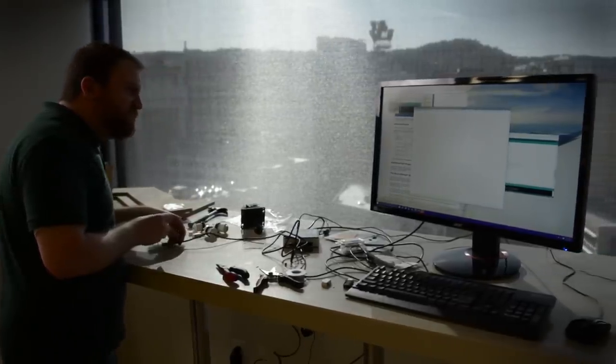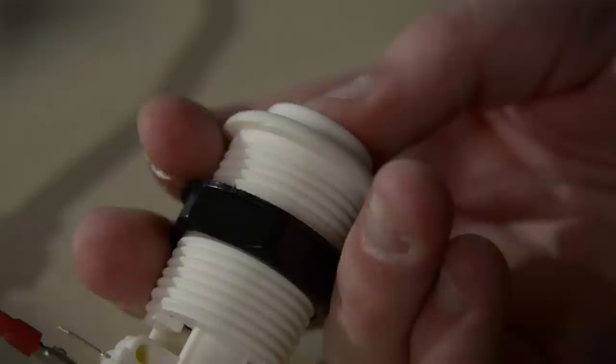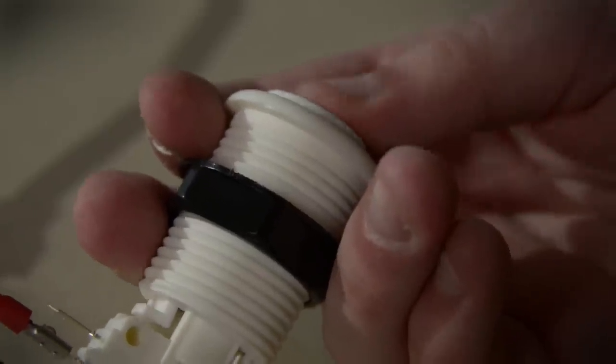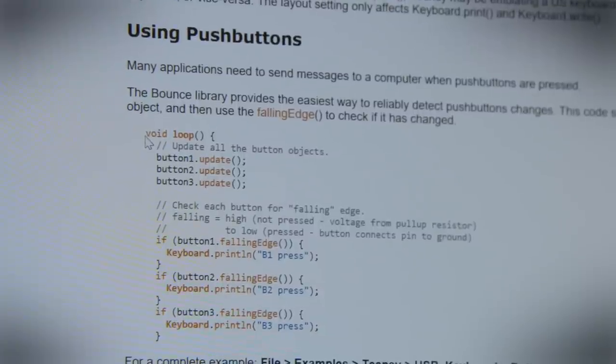Before building the cabinet, we assembled one button and wired it through the Teensy to test out the keyboard encoding software. A short Arduino program running on the chip sends these signals to the computer as keyboard presses, where another program turns them into game controller inputs. You can find the code we use in the links below the video.